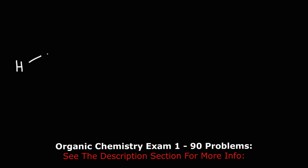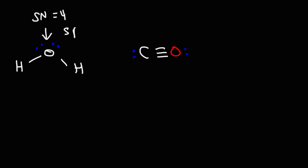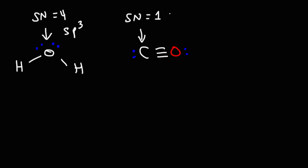Now determine the steric number and hybridization of the oxygen atom in water and the carbon atom in carbon monoxide. The oxygen in water has two sigma bonds and two lone pairs, giving a steric number of 4 and sp3 hybridization. The carbon in CO has one sigma bond and one lone pair, giving a steric number of 2 and sp hybridization. The oxygen in CO also has a steric number of 2 and is sp hybridized.